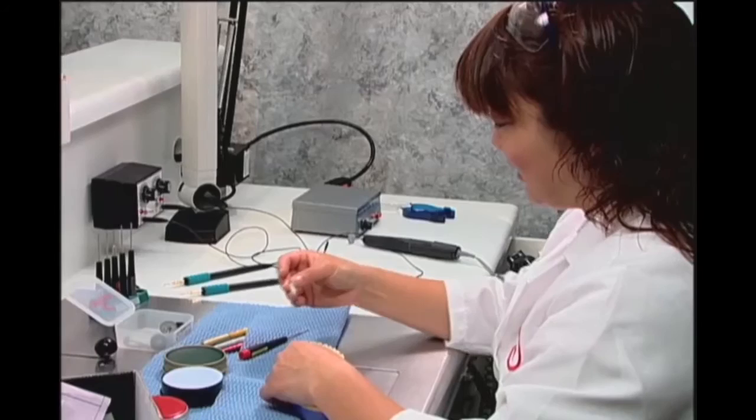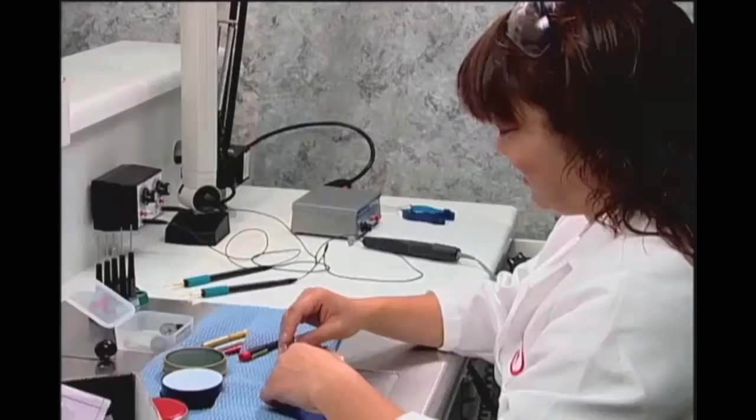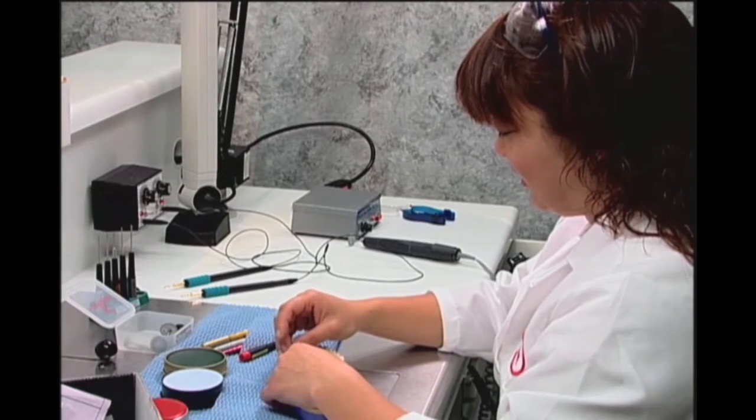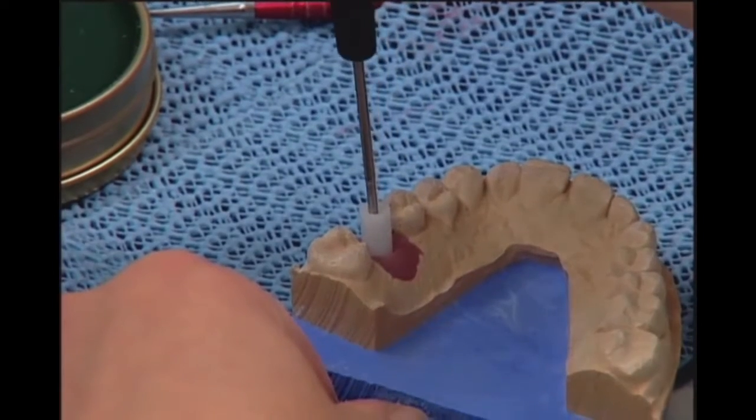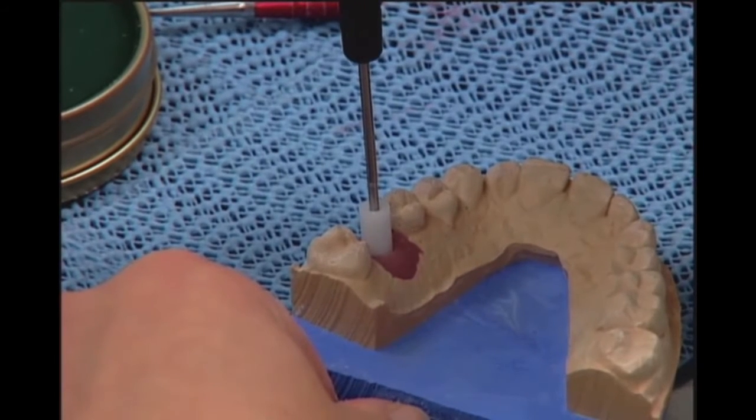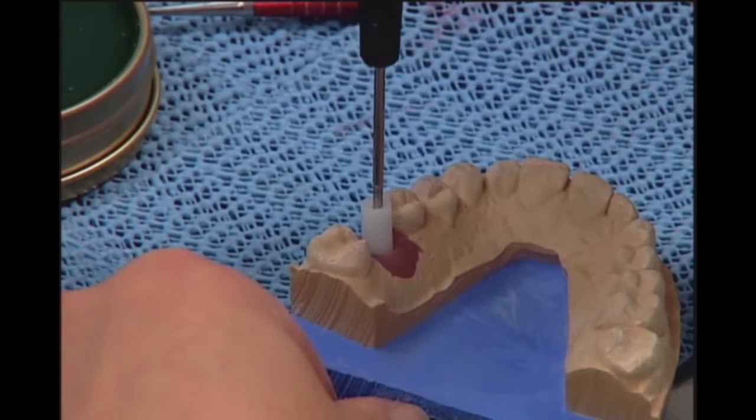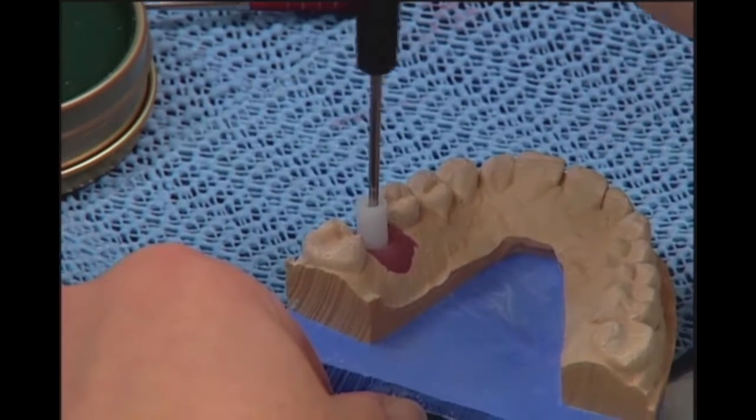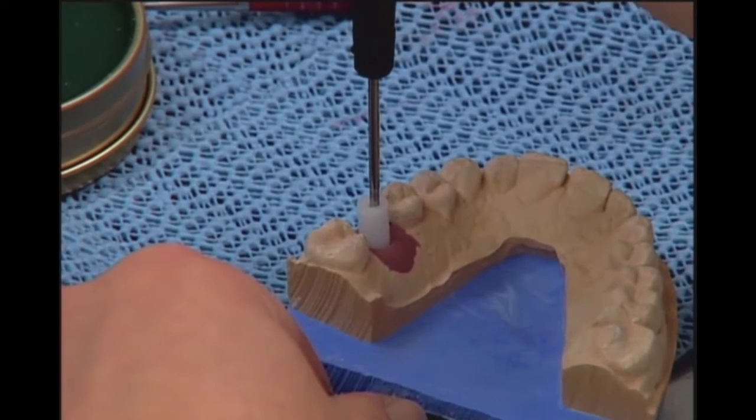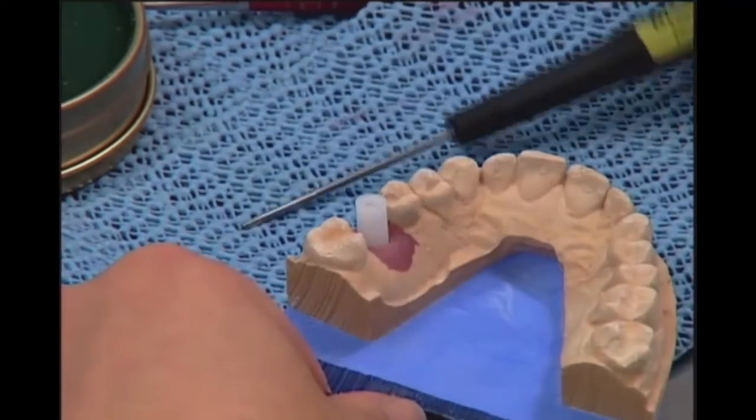Place the waxing sleeve onto the implant analog in the soft tissue model, taking special care to ensure that the sleeve and analog are completely engaged. Once you are certain that the two pieces are fully engaged, use the appropriate screwdriver to tighten the abutment screw. The waxing sleeve must be fastened securely, but take care not to over-tighten the screw as this may cause the plastic to deform and make it more difficult to remove the screw later.